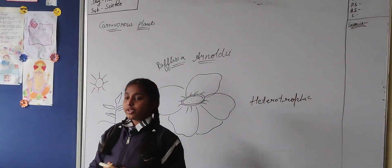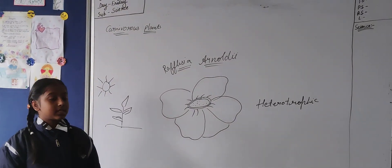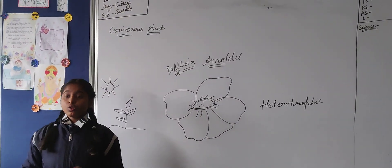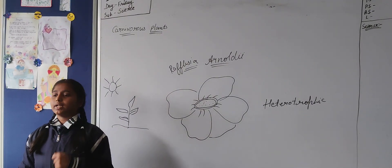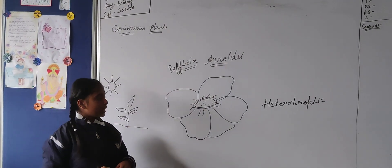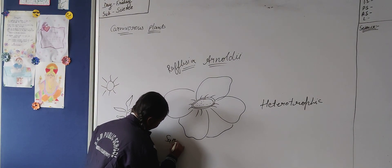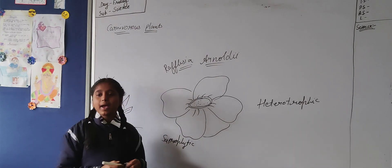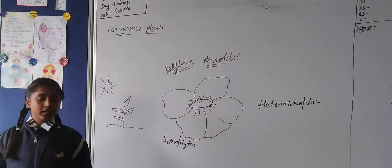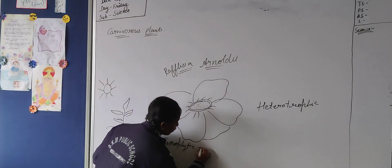There are four types of heterotrophic plants. First is saprophytic. Those plants which have lack of chlorophyll and cannot prepare their own food, those plants are considered as saprophytic, like Indian pipe. Indian pipe is a plant which has lack of chlorophyll.